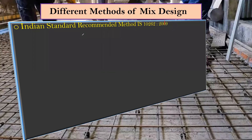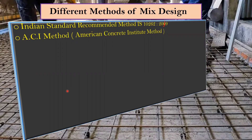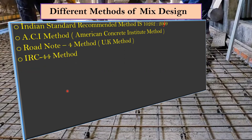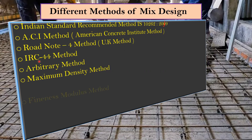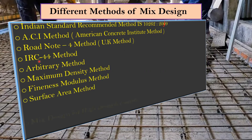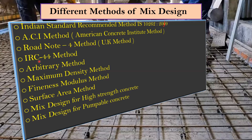The second method is the ACI method — American Concrete Institute. The third is Road Note 4, a UK method. Then we have IRC 44, used by the Indian Road Congress for road construction. We also have the arbitrary method, maximum density method, fineness modulus method, surface area method, mix design for high strength concrete, mix design for pumpable concrete, and the DOE British mix design method.